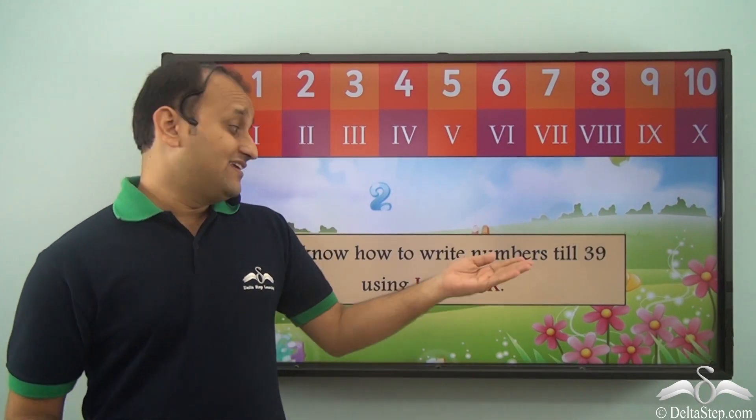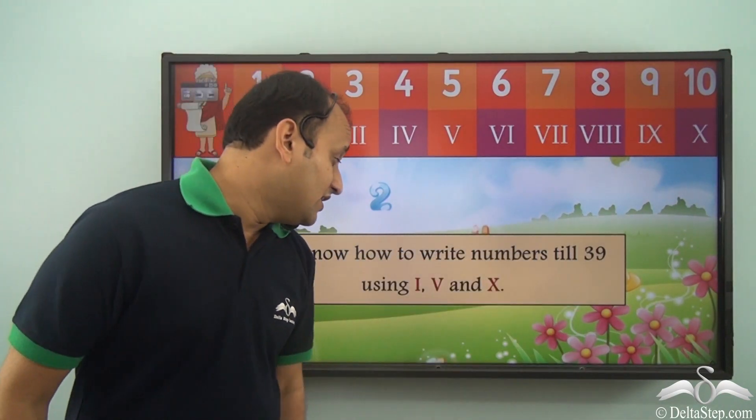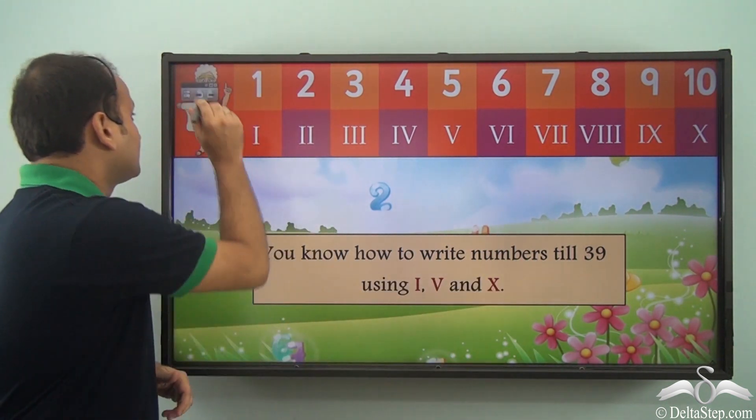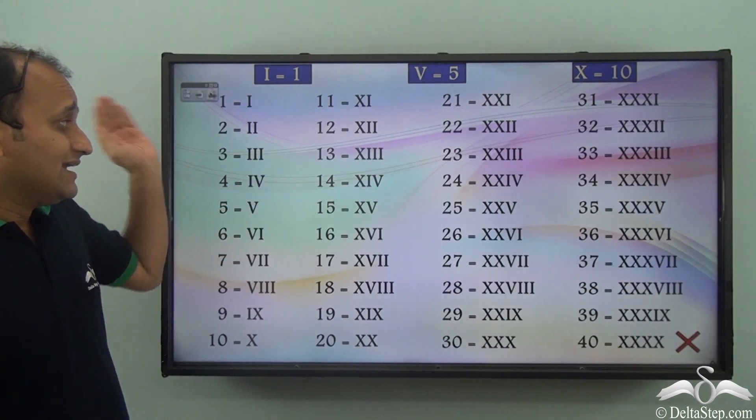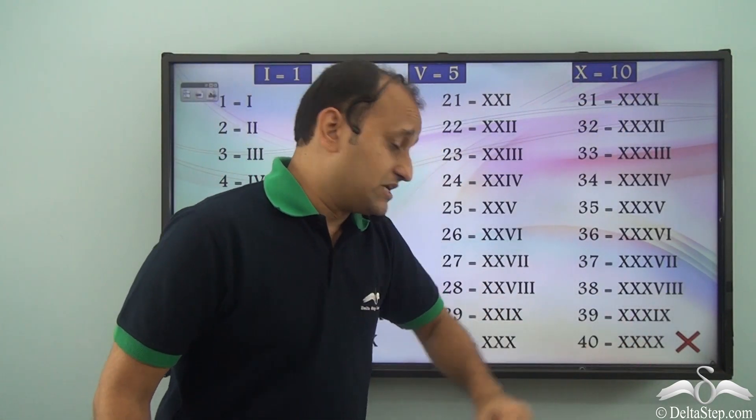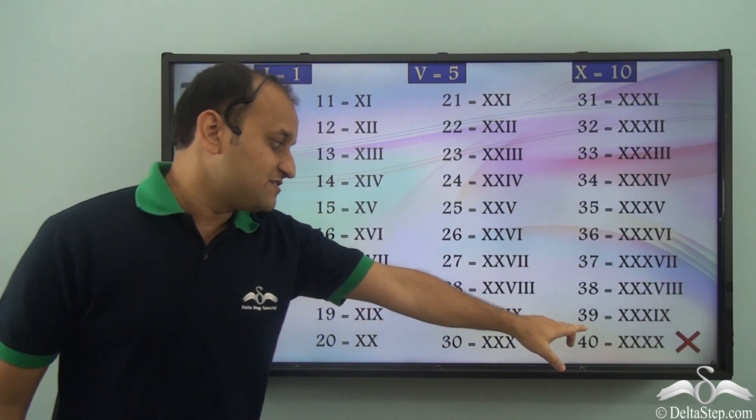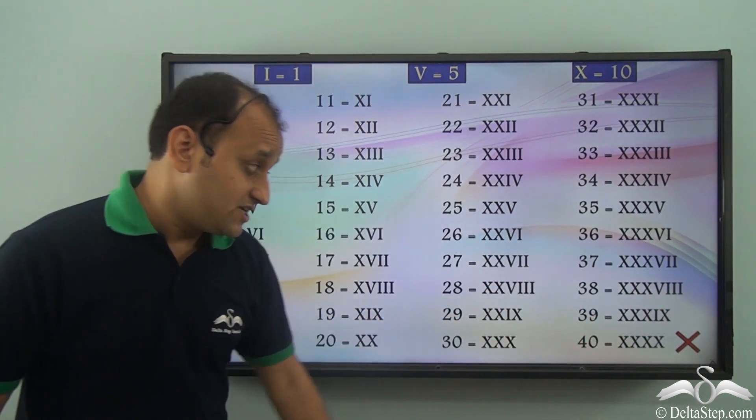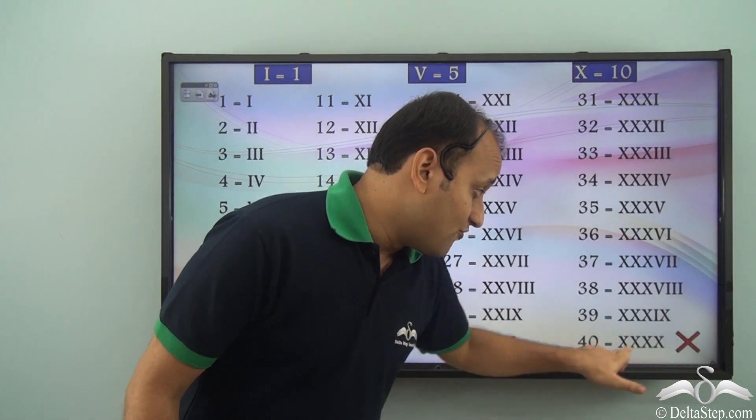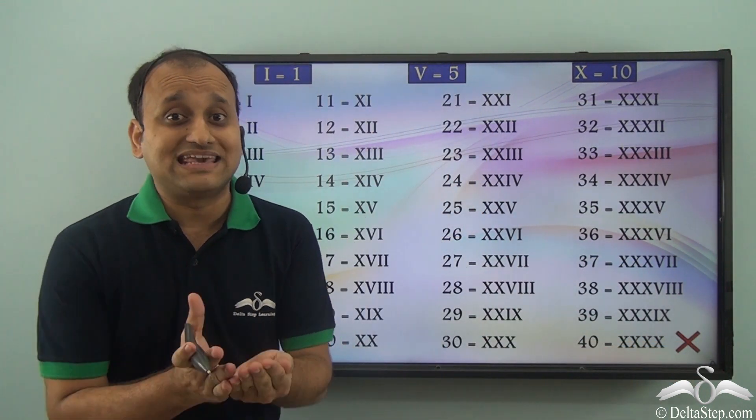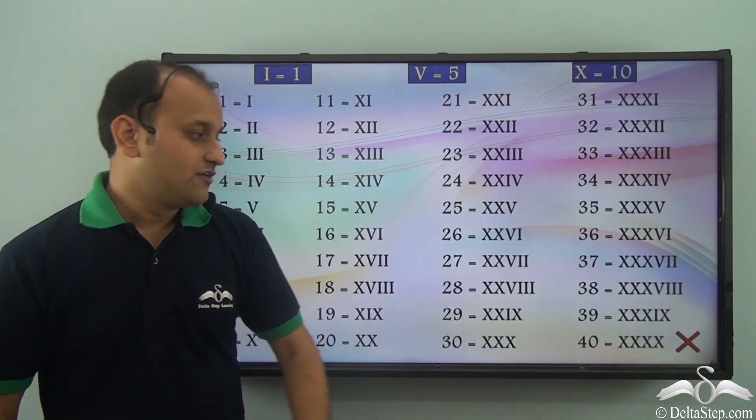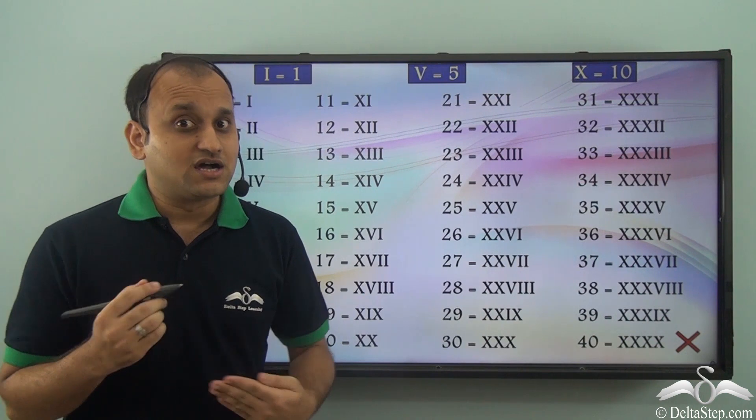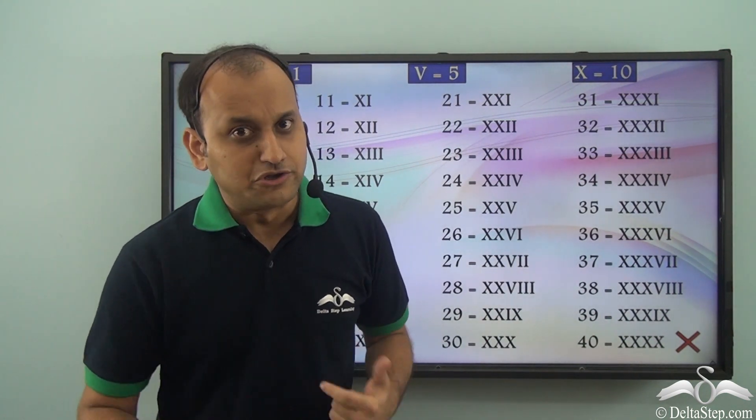We know that we can write numbers till 39 using symbols I, V, and X. So using these three symbols we can write till 39, but we face a problem when we are writing 40 because in case of 40 we have to write four X's together, which is not allowed in case of Roman numerals. We cannot have four symbols of same type consecutively. So what is the solution to this problem?